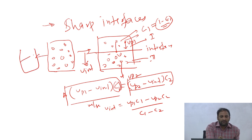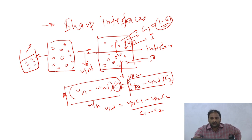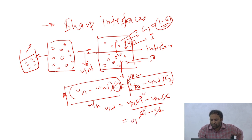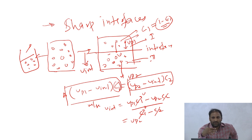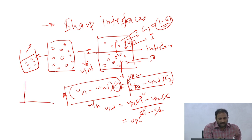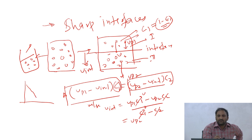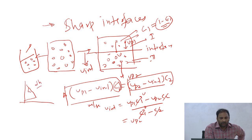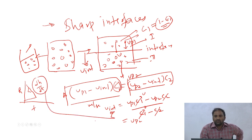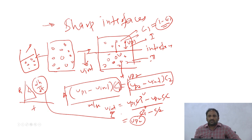Working this out, u_int equals (u_p1 times c_1 minus u_p2 times c_2) divided by (c_1 minus c_2). If one region is clear fluid, say c_1 equals zero, then u_int simplifies to u_p2. In settling experiments, following the interface velocity - plotting height versus time and finding dh/dt - gives you the slope, which is the interface velocity, and from that you can calculate the settling velocity.